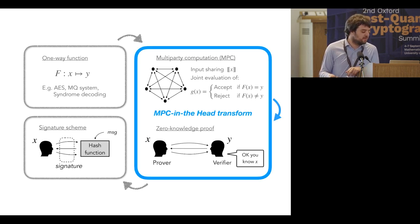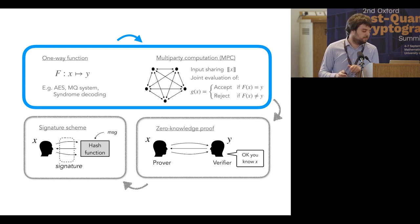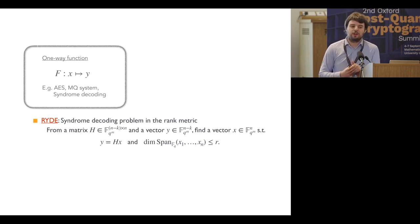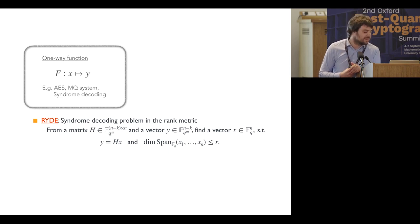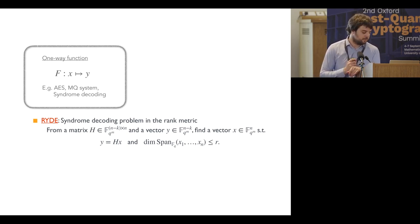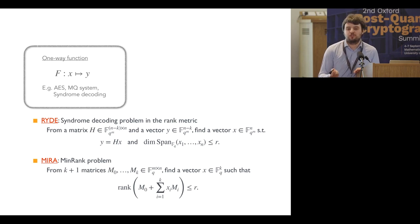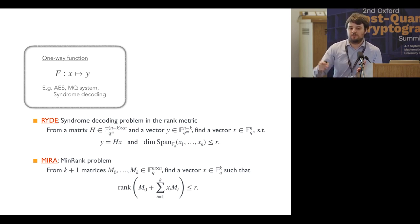Returning to the roadmap: the MPC-in-the-Head transformation has been explained. Now let's deal with the first part — choosing a one-way function. In the case of RIDE, we consider the syndrome decoding problem in the rank metric: from a matrix H and a vector Y, we need to find X such that Y = HX, and such that the dimension of the FQ linear subspace generated by the coordinates of the secret is at most R. In the case of MIRA, we consider the MinRank problem: given K+1 matrices, find a linear combination of them such that the result has rank smaller than some bound R.